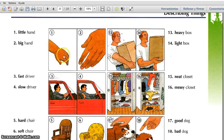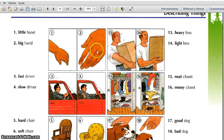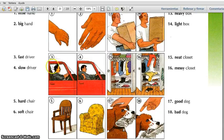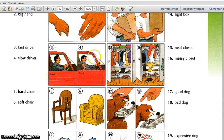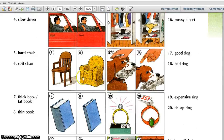Little. Number two: big hand. Big. Number three: fast driver. Fast. Number four: slow driver. Slow. Number five: hard chair. Hard. Number six: soft chair. Soft.